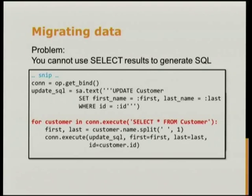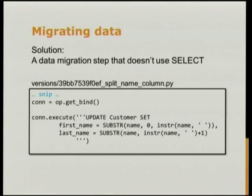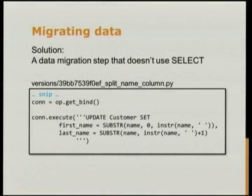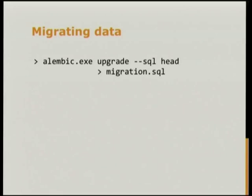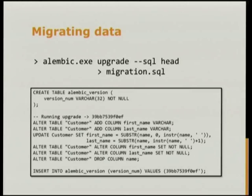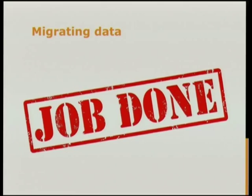Rule number one when writing data migrations is that you can't actually use the results of a select statement in SQL mode. This is actually a good thing, because otherwise your upgrade step would only migrate Mickey Mouse and Donald Duck and not the rest of your customers. It's quite simple to rewrite your upgrade step to something that doesn't use a for loop — using subquery SQL commands. Then you can run your upgrade command to generate a script, give that to your DBA, and that's the job done.